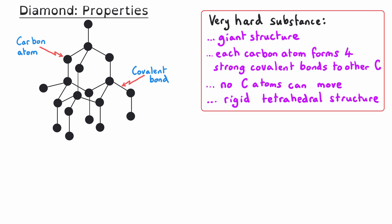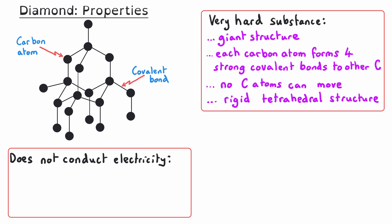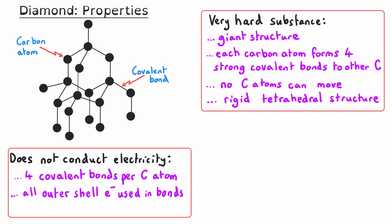The second property is that diamond does not conduct electricity. This is because it has four covalent bonds per carbon atom. Each covalent bond is made up of a shared pair of electrons, so each carbon atom uses up all of its outer shell electrons in bonding. As a result, there are no delocalized electrons to move through the structure and carry charge, and so diamond does not conduct electricity.